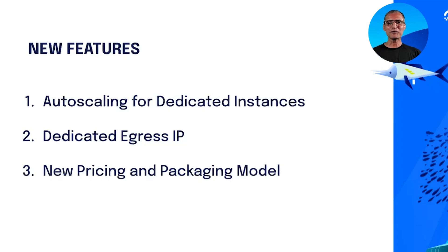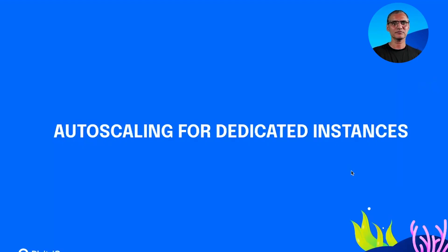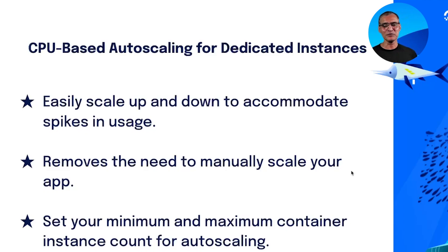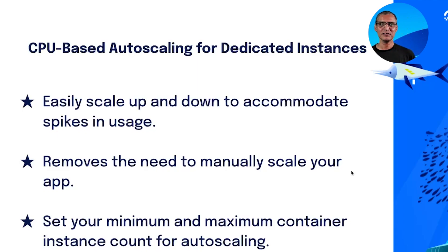Let's talk about auto scaling. Most applications have fluctuating demand. In the past, in App Platform, you had to manually monitor the resources and adjust the compute capacity based on the demand. CPU-based auto scaling solves that problem.